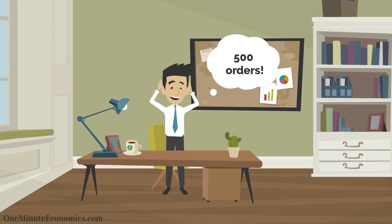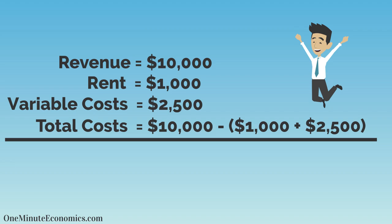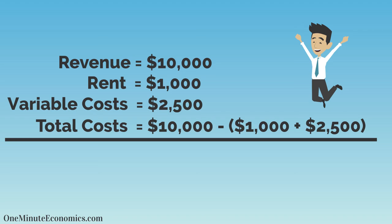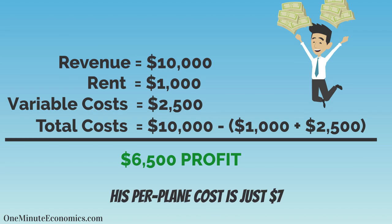His second month, however, is great, with him receiving 500 orders. He generates $10,000 and pays $3,500 — $1,000 for rent and $2,500 in variable costs — securing a more than decent $6,500 profit. His per-plane cost is now a much lower $7.